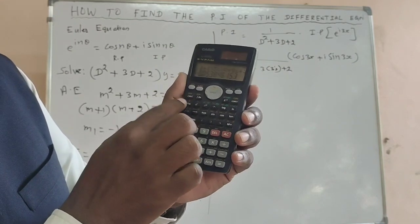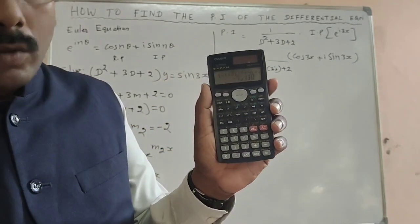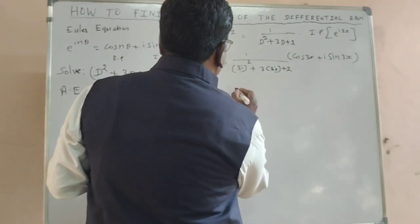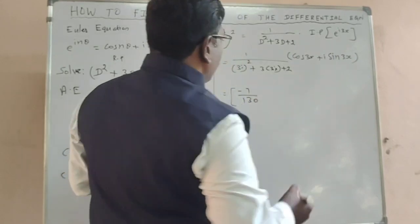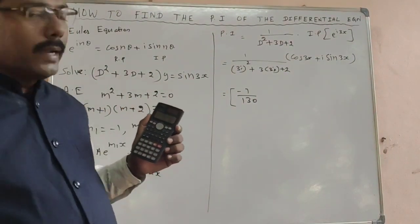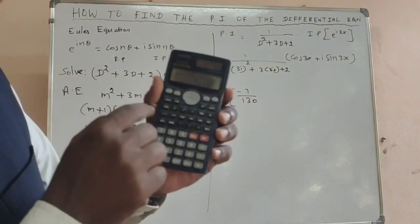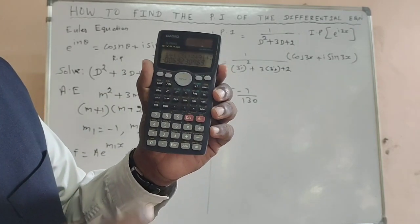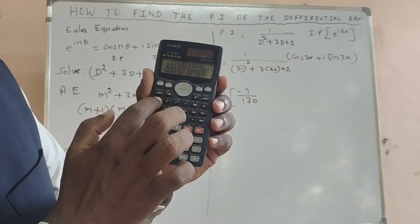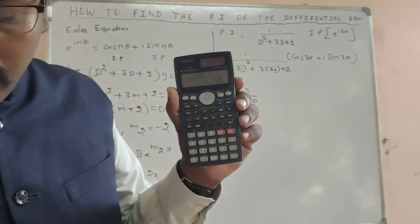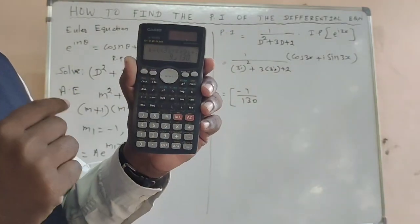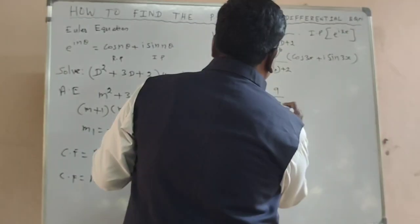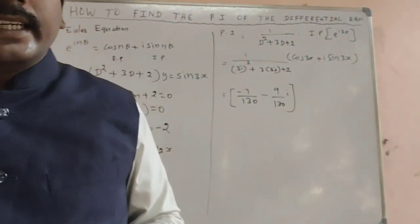Then press the a b/c button. We get minus 7/130 — this is the real part. So write down −7/130. Then press shift equals. After that press shift equals again, then press a b/c. We get minus 9/130 — this is the imaginary part. In the calculator you can see i here. So write down −9/130·i.